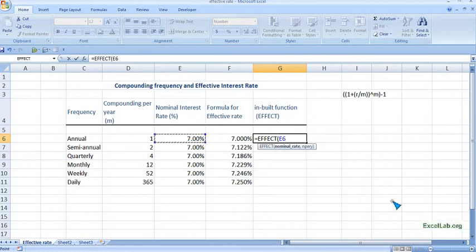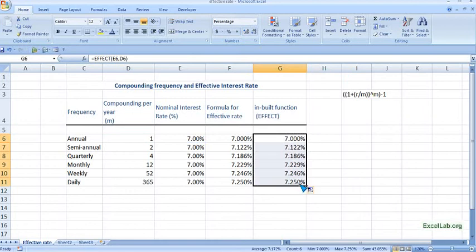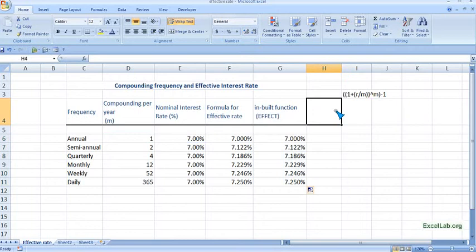It is asking for nominal rate—it is seven percent. Just give the cell reference, put comma. Number of compounding per year is one. Click on this, close the parenthesis, and enter. It's the same. You can see the formula and the inbuilt function match. You can use autofill—it's the same.